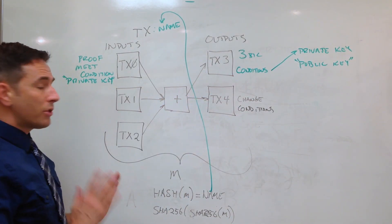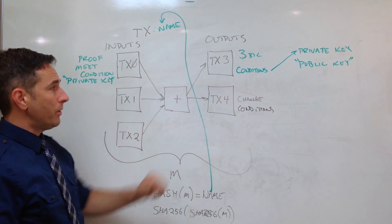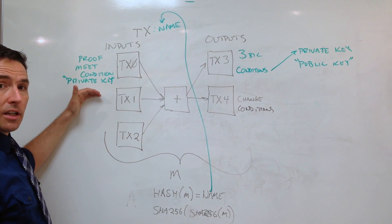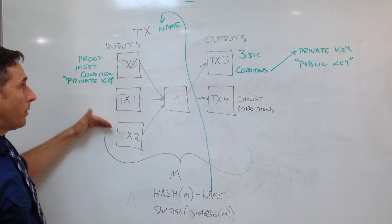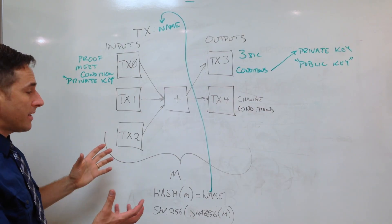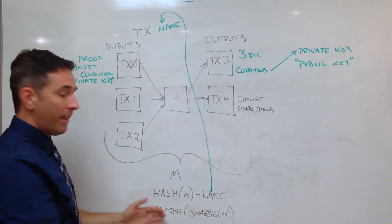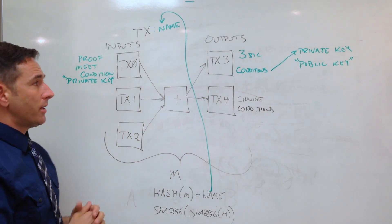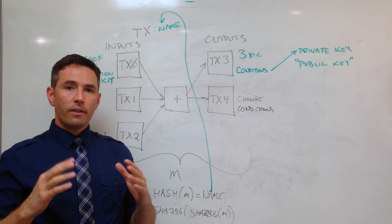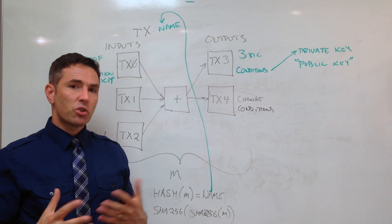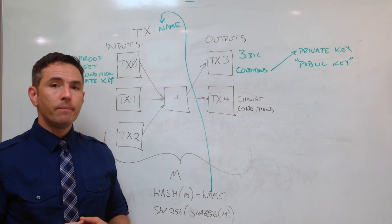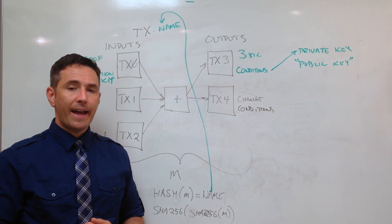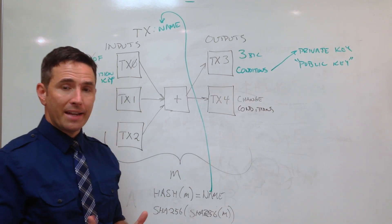So abstractly: inputs, outputs, conditions specified on the outputs, proof required to meet conditions on each input, and the transaction gets a name that is a hash of the entire transaction. That's a general transaction — the typical one. In each block, though, there is one special transaction called the Coinbase transaction.